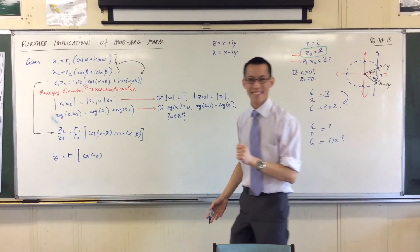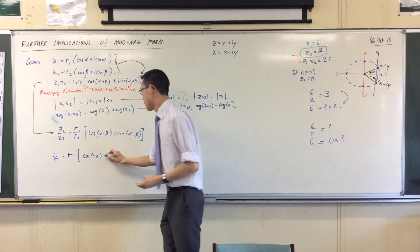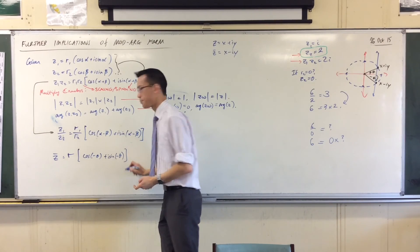Ah, because cos is an even function. Right? Cos is an even function. Cos of negative theta is cos theta. Right? Plus, i sine of negative theta. Okay?